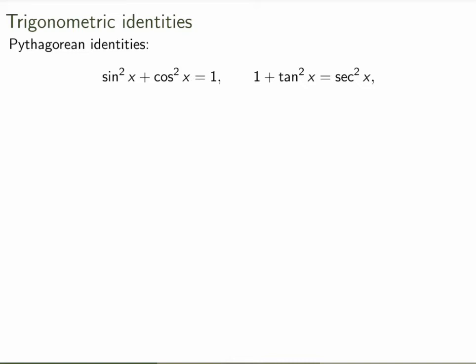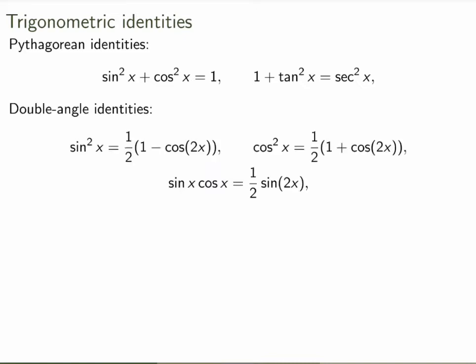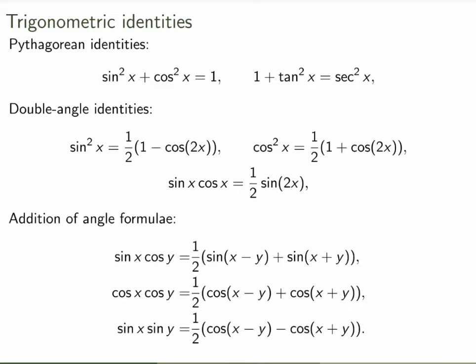So we'll first use standard trig identities, Pythagorean identities, sin²x + cos²x = 1, and similarly for tan and secant. So these ones you should know very well. We're also going to use a double angle formula, so these are relating sine of x and cos of x to sin(2x), cos(2x), an addition of angle formulae which relates sin x cos y, cos x cos y and sin x sin y. Now you don't have to know all of them by heart, but you can just look them up and use them to evaluate the integrals.